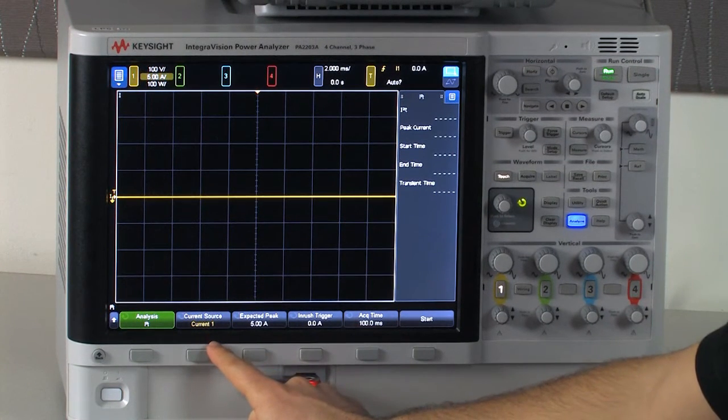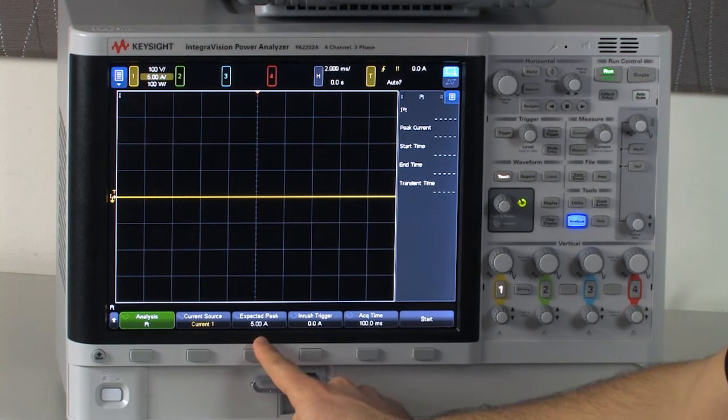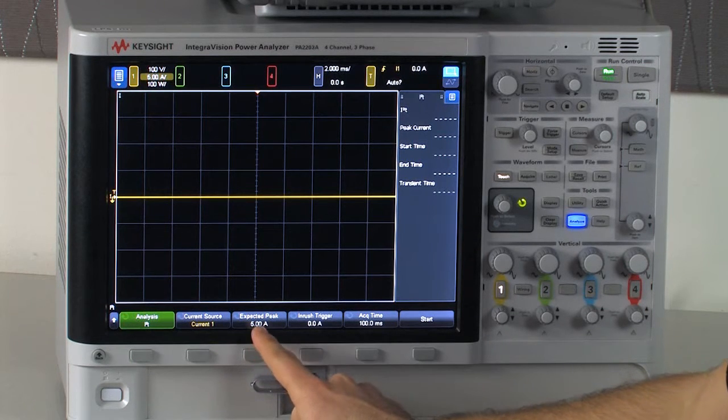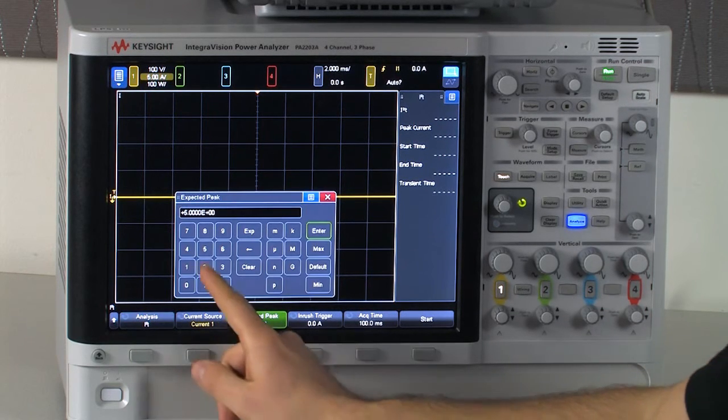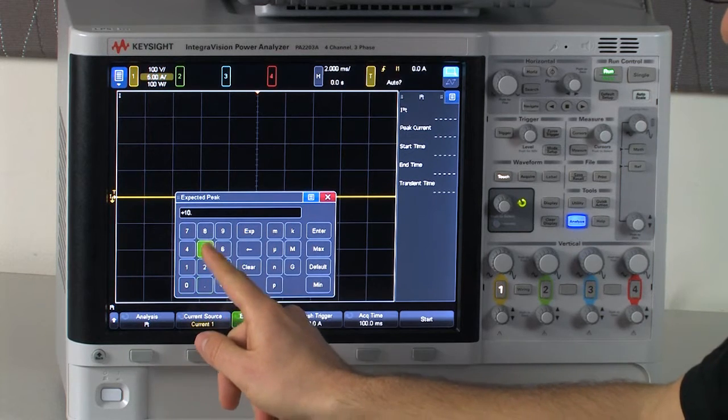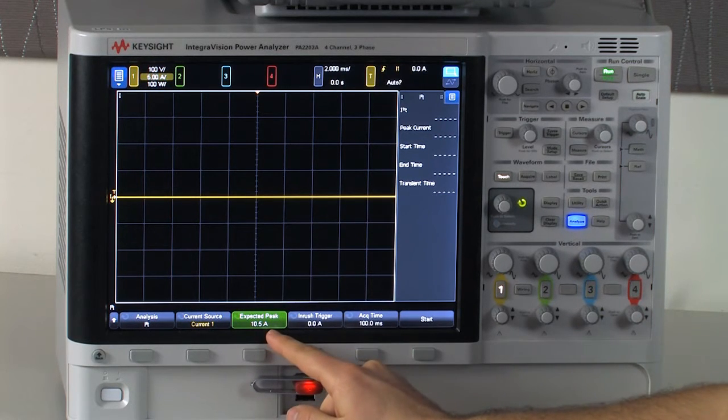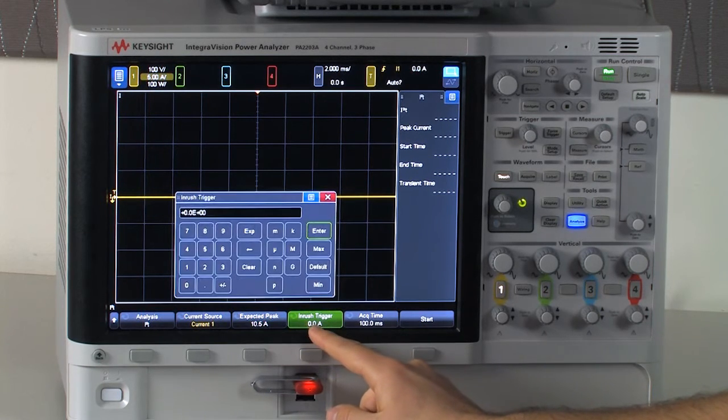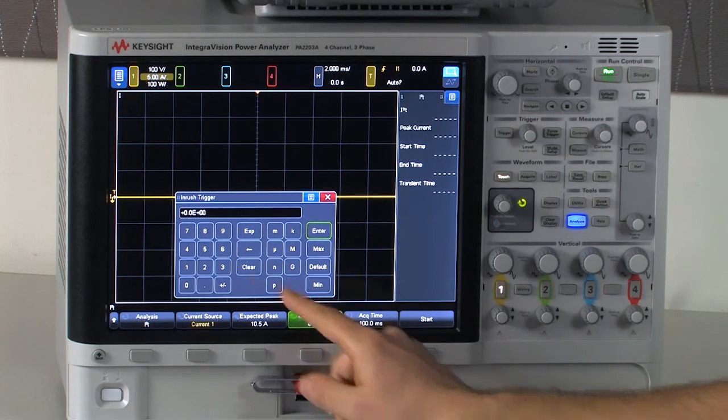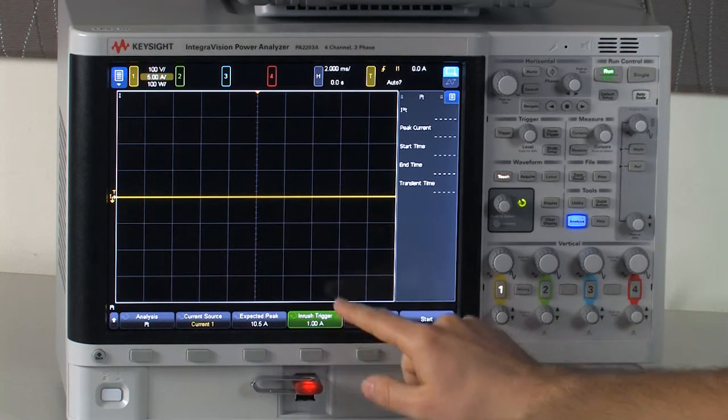The current source is what we'll be doing the I-squared-T test on. The expected peak will be at or above the inrush current peak that you're expecting. Since I have a 10 amp peak, I'll set that to 10.5 just to be a little bit higher and to set the hardware range. The inrush trigger is the current level which the test will trigger off of. I'll set that to 1 amp.